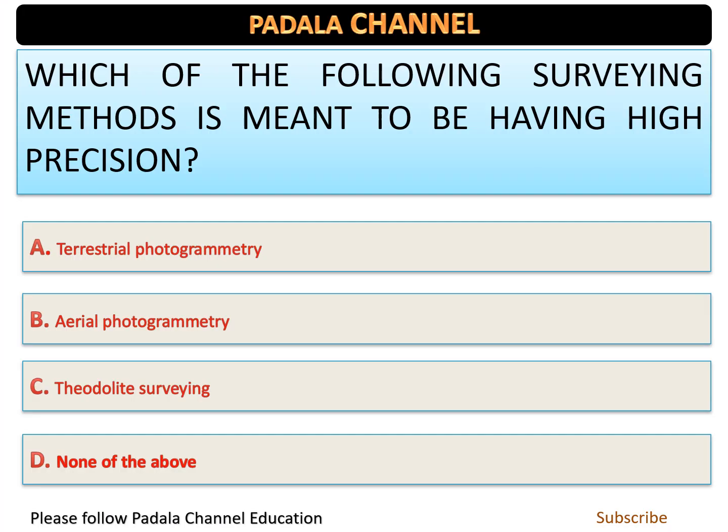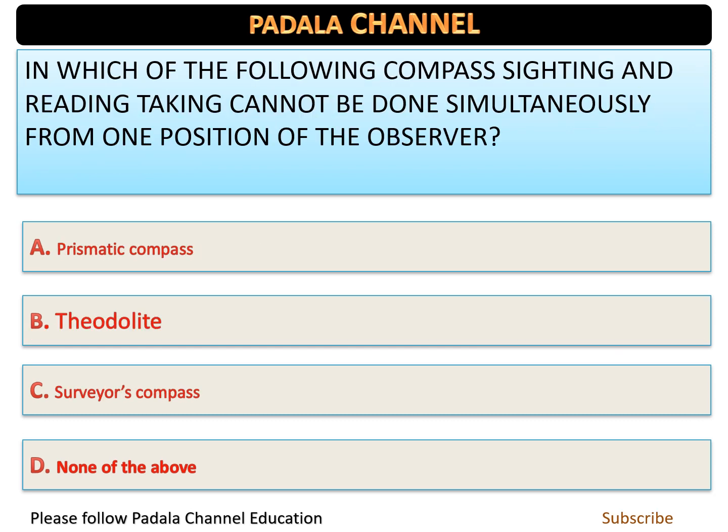The first question: which of the following surveying methods is meant to have high precision? Among the given options, the one with higher precision is the correct answer. Aerial photography has lower precision compared to the correct option here.